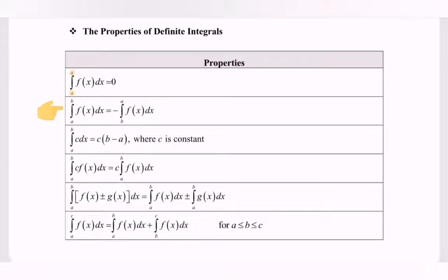The second property: integrate the function f(x) with respect to x from the limits a to b, which is equal to negative of the integral of f(x) with respect to x, only if the values of the limits are interchanged — that is, from a to b interchanged to b to a.